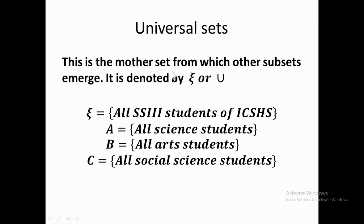As you can see on the screen right now, the universal set is the mother set from which other subsets emerge. We denote the universal set using the letter U — an elongated U — or using this Greek symbol. So we use U or this symbol to represent the universal set.